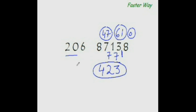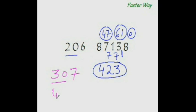By now you must have realized that this method works extremely well as long as your main divisor is a manageable, friendly number. If it were 307, then 30 is a manageable number and poses no problem. Even if it were 4008, you can easily divide because 400 is your main divisor and it is not difficult to divide by 400.